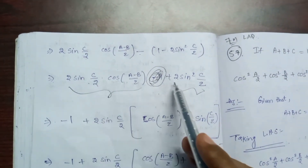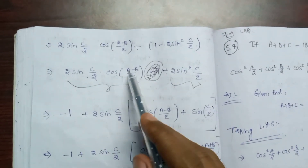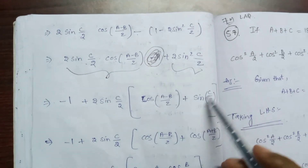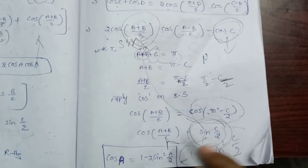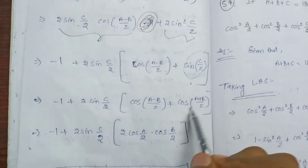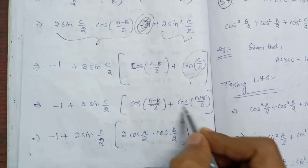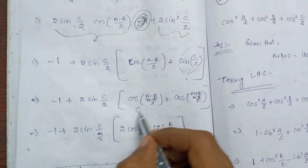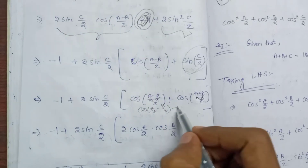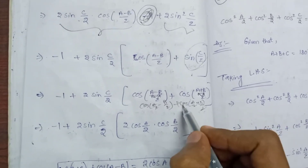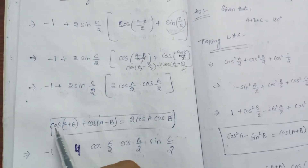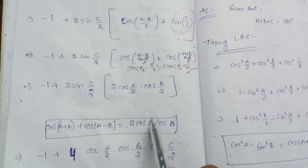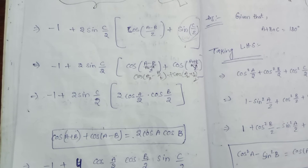Now 2 sin(C/2) is common. Taking 2 sin(C/2) as common factor: 2 sin(C/2) times [cos((A-B)/2) plus sin(C/2)]. Here sin(C/2) equals cos((A+B)/2), so we substitute: cos((A-B)/2) plus cos((A+B)/2). Applying the formula: cos(A+B) plus cos(A-B) equals 2 cos A cos B.